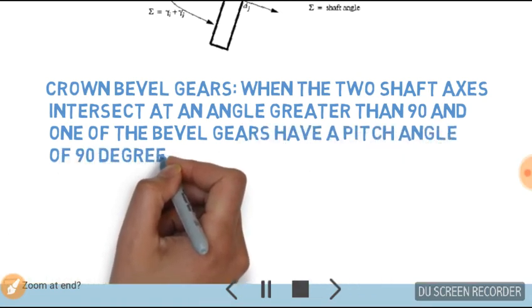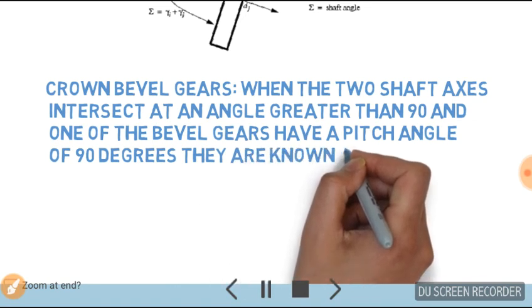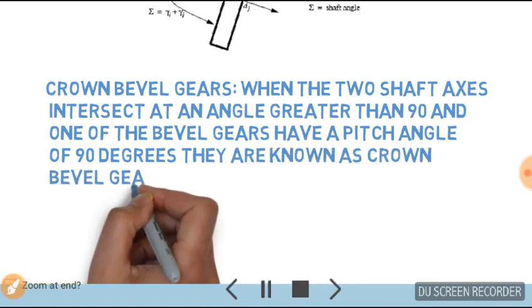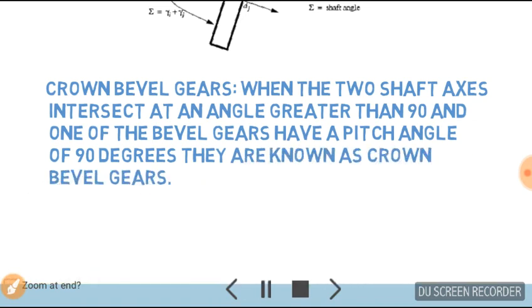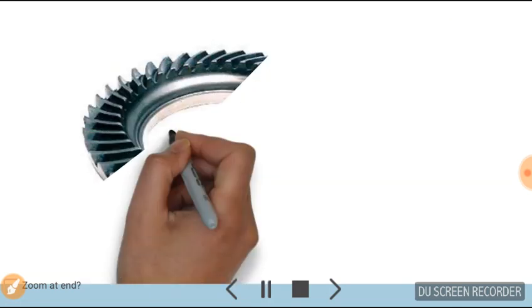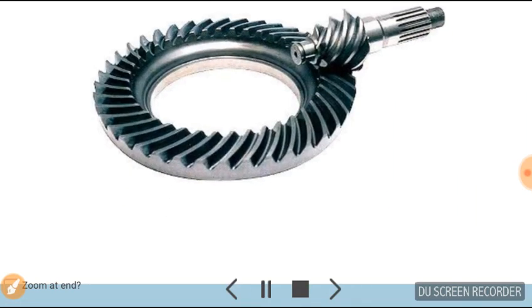This is the critical diagram of crown bevel gear.